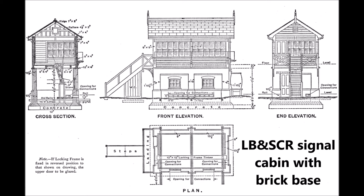Another system which is sometimes used for temporary working of single lines is to appoint a pilotman who has to ride upon the engine of every train occupying the section. Very often, however, several trains require to proceed in the same direction, and in order that the pilotman should accompany each train, he would have to walk back unless a light engine could be used for this purpose.